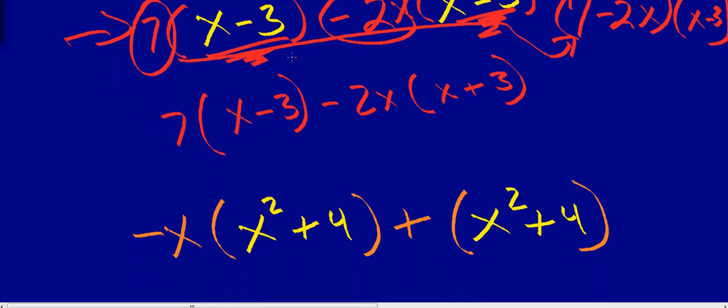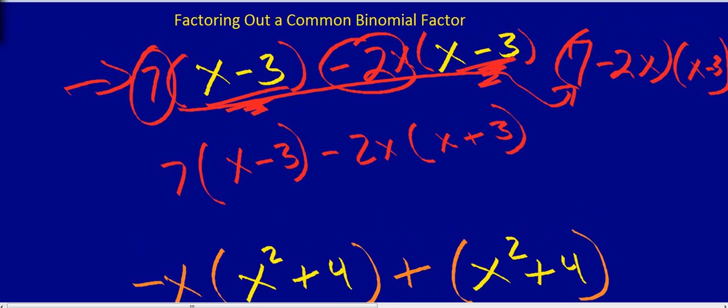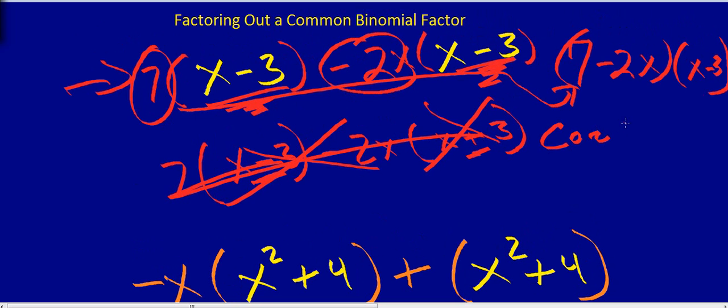Now this only works if these binomials are the same. Like here, you got a minus here and a plus here. We can't factor anything out. Nothing we can do. Can't do anything. So remember that. You'll see some problems like this on the test. Don't get them wrong.